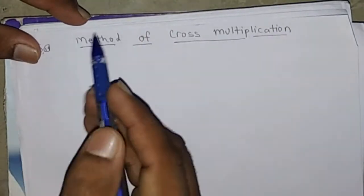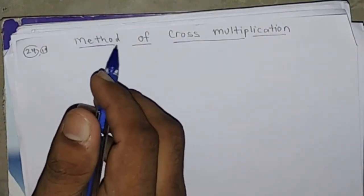Good morning class. Today's topic is method of cross multiplication. In the previous classes we learned substitution and elimination method, and it is the third method of solving a pair of linear equations.